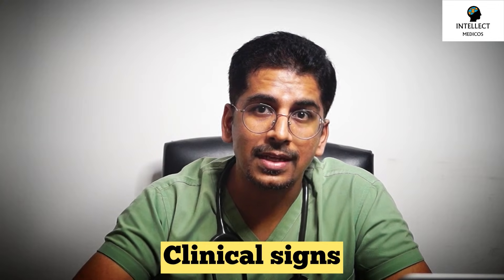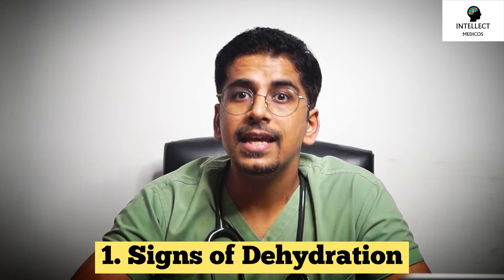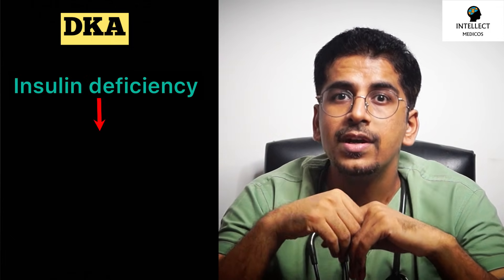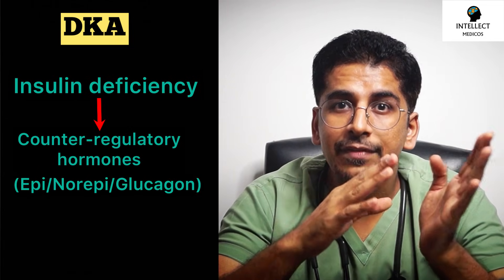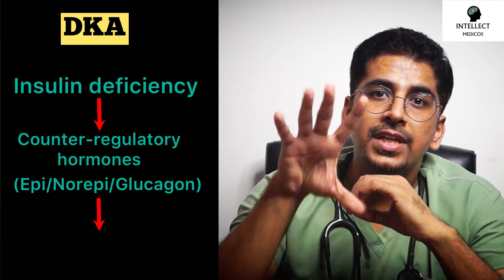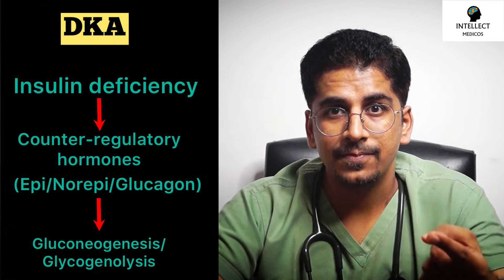Now for physical examination and clinical signs: the first and most important finding in DKA is dehydration — very, very important. To briefly explain the pathophysiology: in DKA, insulin deficiency stimulates counter-regulatory hormones — catecholamines, norepinephrine, epinephrine, and glucagon. These cause excess glucose by driving hepatic gluconeogenesis and glycogenolysis, resulting in intense hyperglycemia. This glucose load pulls extra water into the kidney and expels it, causing dehydration.